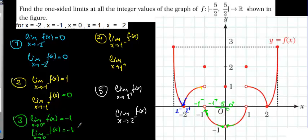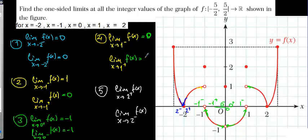Now for 1 negative — the function is getting closer to this value. I also need to correct here: the function getting closer to this value should be 0. When I get closer from the positive side of 1, the y-value is equal to 1, so it's 1. For 2 positive and 2 negative: 2 positive equals 0 and 2 negative is also 0.